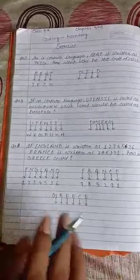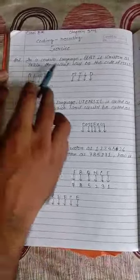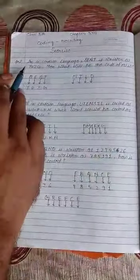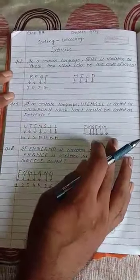Now come to question number 2. It says in a certain language, BIT is written as YVZG. Then what will be the code for MILD?